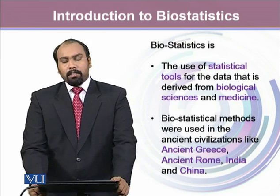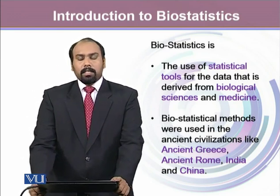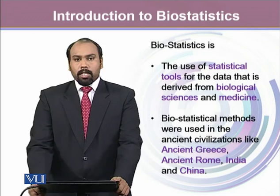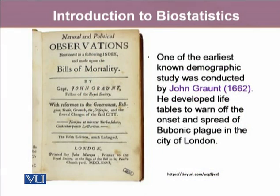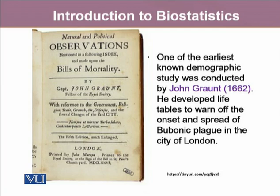Biostatistics methods were used in older civilizations like in ancient Greece, ancient Rome, India, and China. One of the earliest known demographic studies was conducted by Sir John Grant in 1662, where he developed some life tables to study the spread of bubonic plague in the city of London. He wrote his articles as the Natural and Political Observations on the Bills of Mortality.